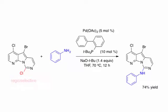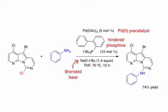Note also the use of a palladium-2 precatalyst, the sterically hindered phosphine, and a stoichiometric quantity of sodium tert-butoxide as a Bronsted base.